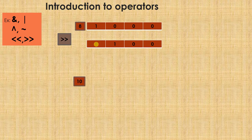If I shift it twice, again this 1 will go here, this 0 will go here, and a new 0 will get added. That is example 1.